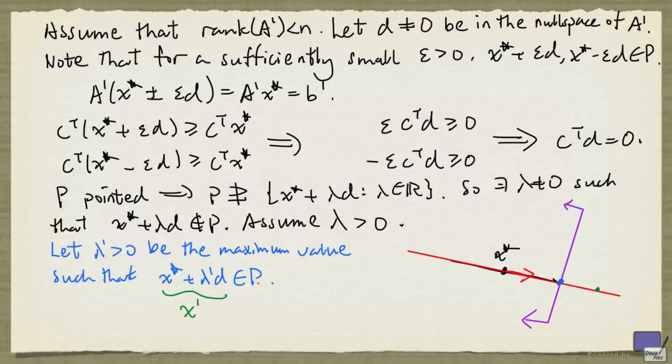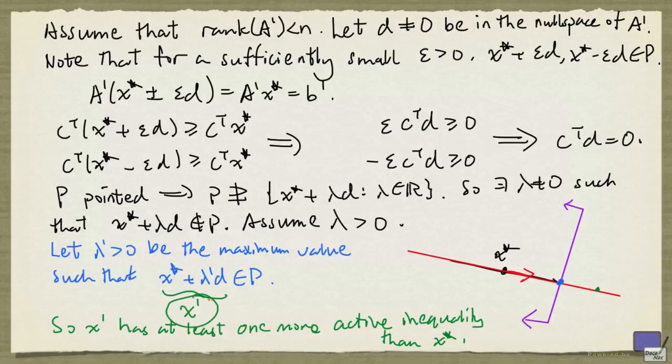So first of all, all the inequalities active at x* will continue to be active at x'. But this purple inequality here will also be active at x'. But it is not active at x*.